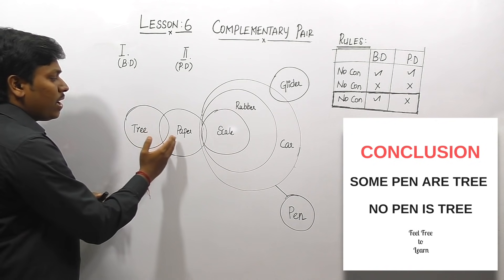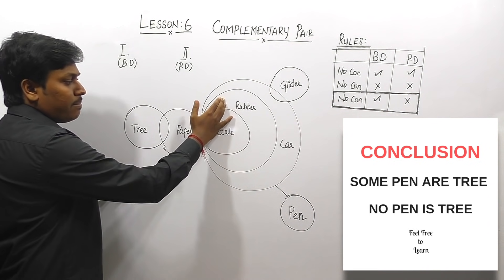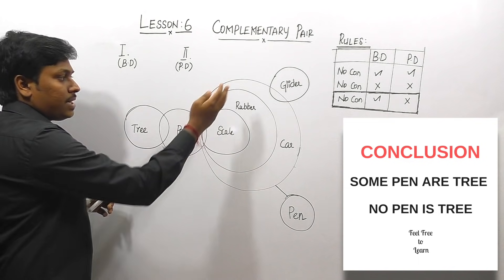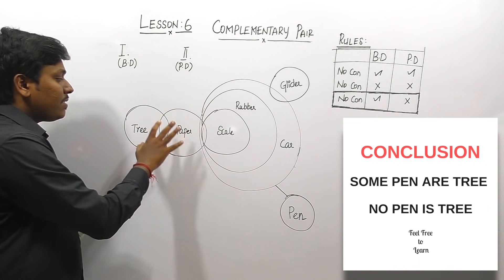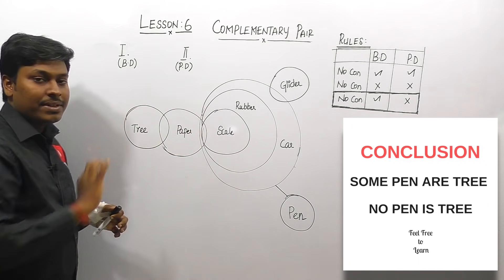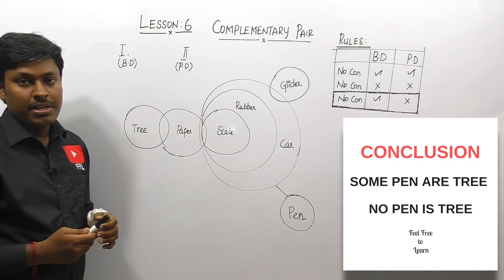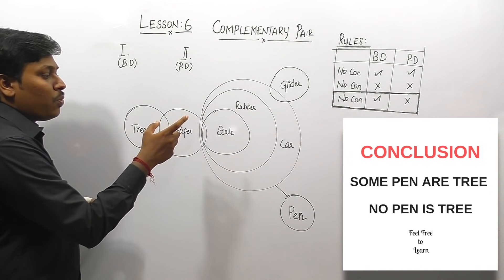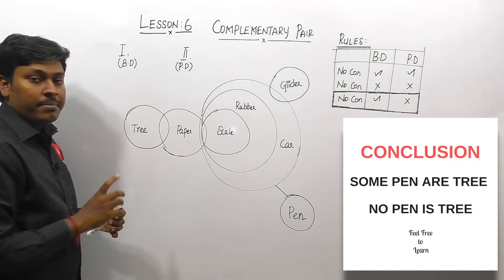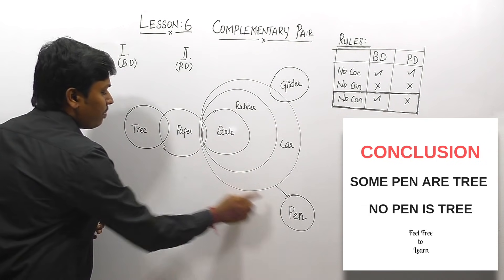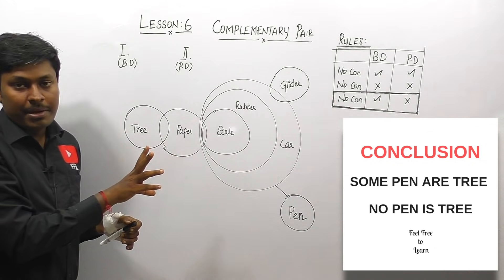Question number one: the statements are — Some trees are paper, Some papers are scale, All scales are rubber, All rubbers are car, Some cars are glider, and No car is pen. We have drawn the Venn diagram for these statements. Conclusion one is 'Some pen are tree' and conclusion two is 'No pen is tree'.